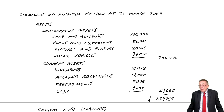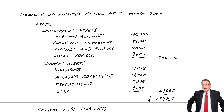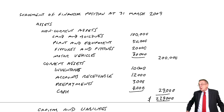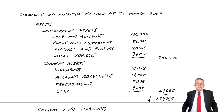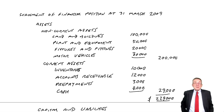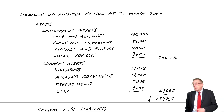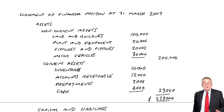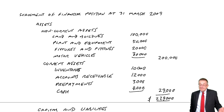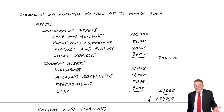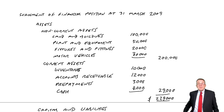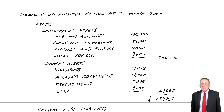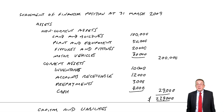The year end can be anything they want. A lot do choose 31st December for obvious reasons, but it could be end of January, or end of June — whatever they want. They've chosen 31st of March, so every 31st of March they would produce this statement.